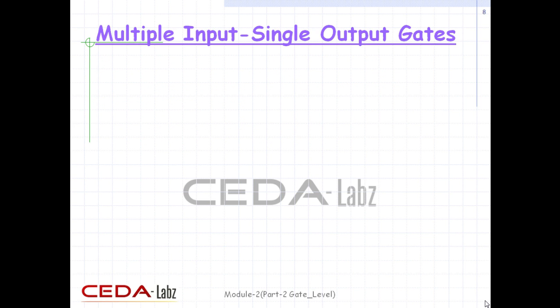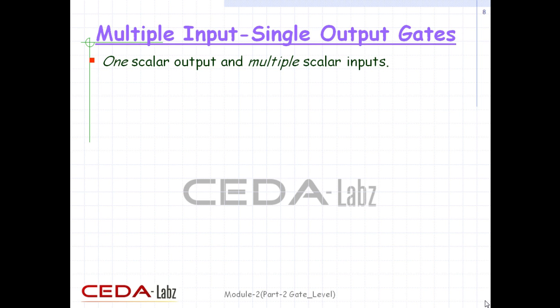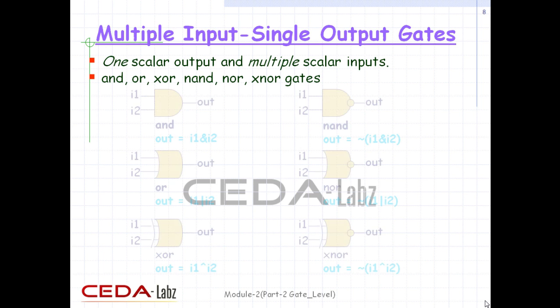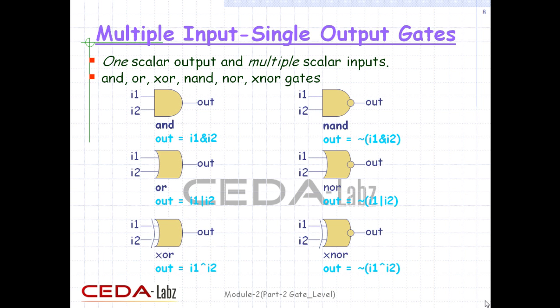Multiple-input single-output gates have one scalar output and multiple scalar inputs. The first terminal in the list of gate terminals is the output and the other terminals are inputs. The output of a gate is evaluated as soon as one of the inputs changes. The gates available in Verilog are AND, NAND, OR, NOR, XOR, and XNOR. The corresponding logic symbols and input-output relationships for these gates are shown here.